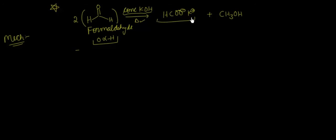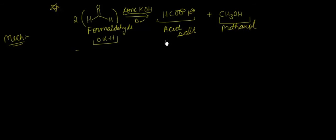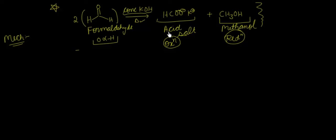The first product will be potassium formate, which is an acid salt. The second product will be ethanol. If you notice the oxidation-reduction, the acid salt is the oxidation product and the second product — the alcohol — is the reduction product. दोनों process एक साथ होते हैं — self oxidation and self reduction होता है। इस reaction को कभी कभी disproportionation भी बोला जाता है।